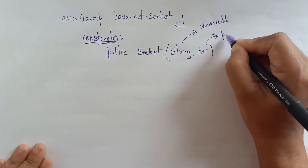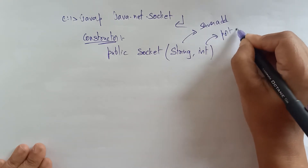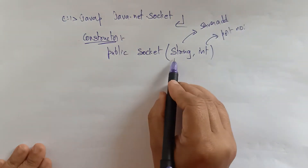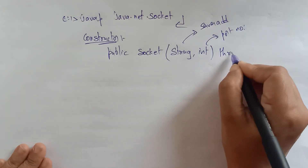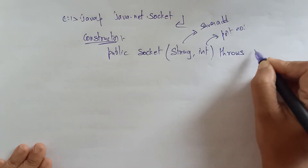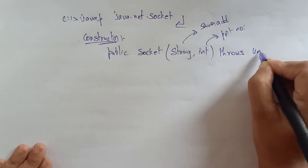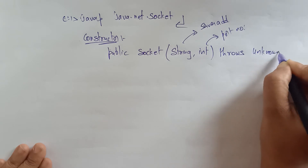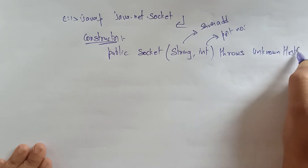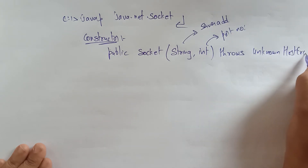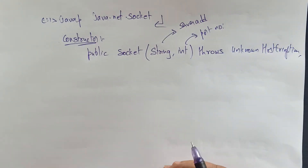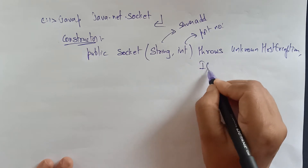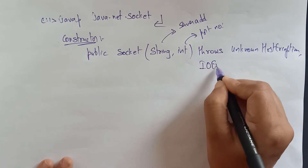This constructor — public Socket(String, int) — throws exceptions: it throws UnknownHostException if that address is not found, and it also throws IOException.